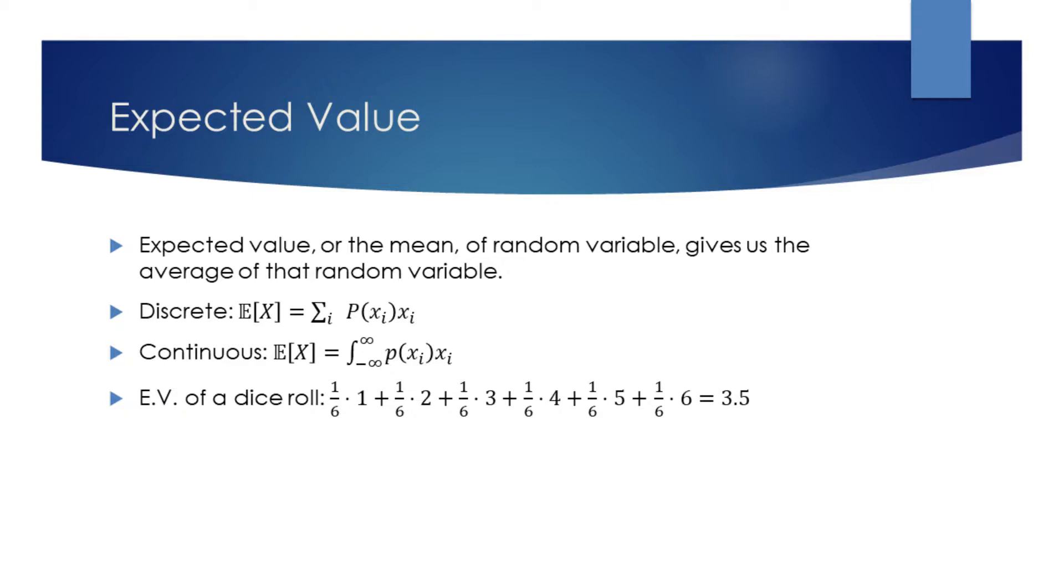For discrete random variables, it is computed by summing the products of outcomes with their respective probabilities. In the continuous cases, we would take an integral.